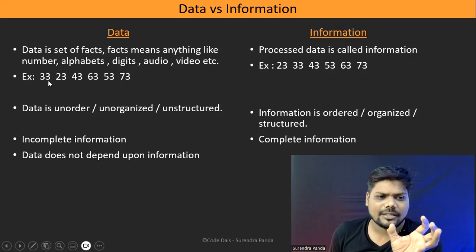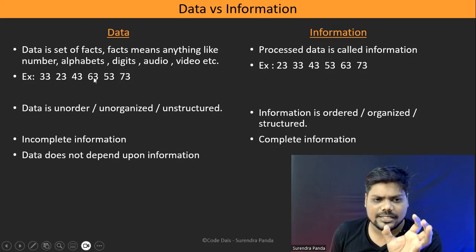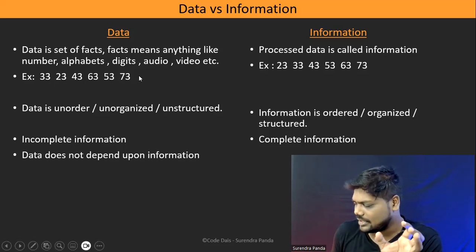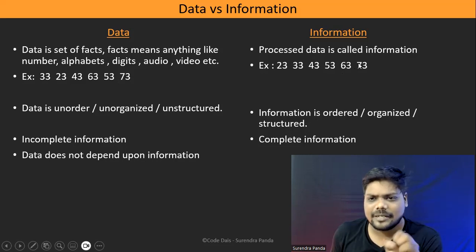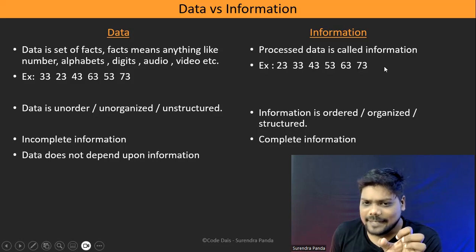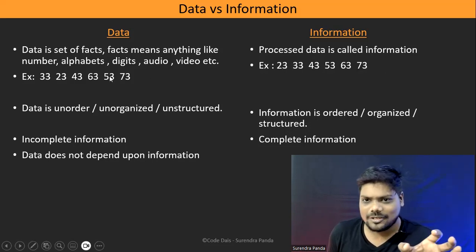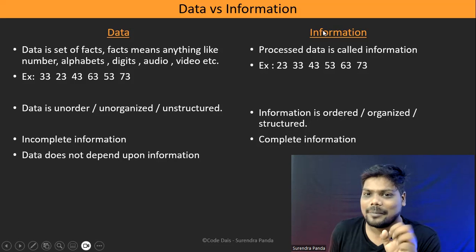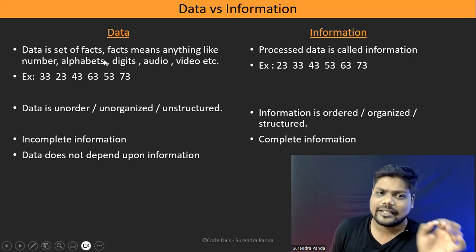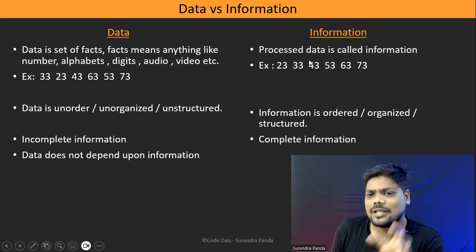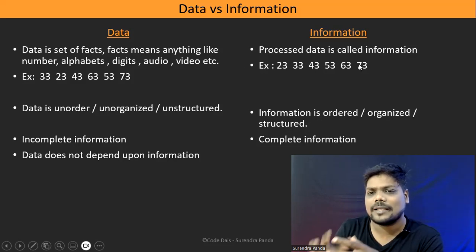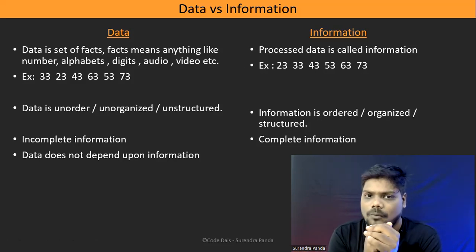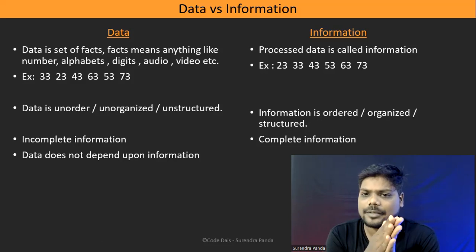Observe: here I gave the numbers 33, 23, 43, 63, 53, 73. Is this data dependent on the information? No. But is the information dependent on this data? Yes. If there is no data, how will we process it and how will we get information? Data can exist without information. But without data, you cannot get information.